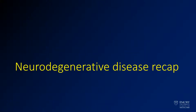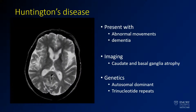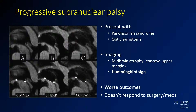To recap all the neurodegenerative diseases: Huntington's disease presents with abnormal movements and dementia. On imaging you have caudate and basal ganglia atrophy. Typically a family member also has Huntington's disease, and it gets worse with each generation. PSP presents with atrophy of the midbrain, giving a hummingbird appearance with a concave midbrain contour. These patients present with Parkinsonian and optic symptoms.